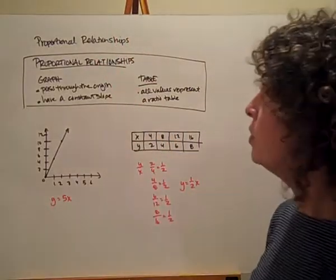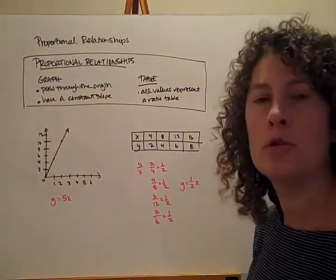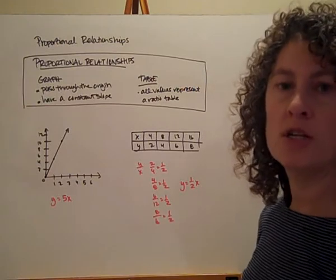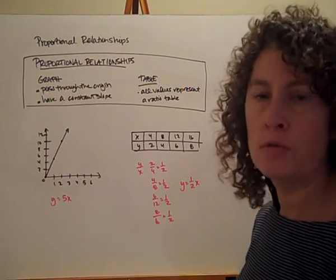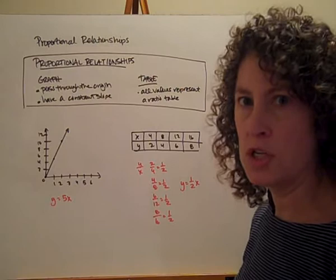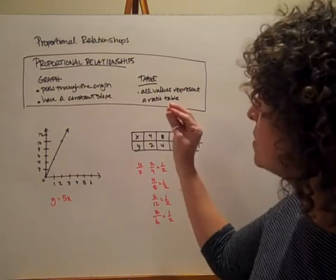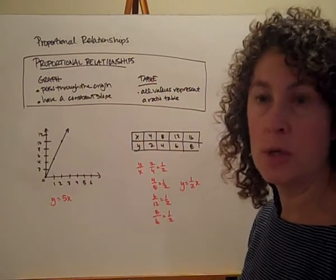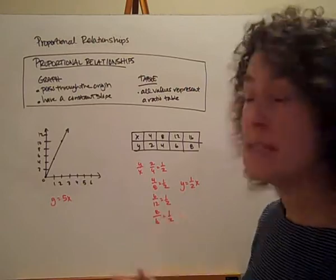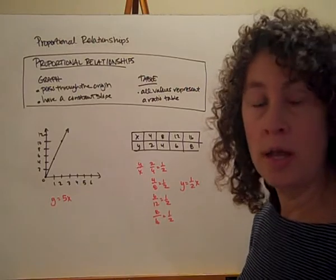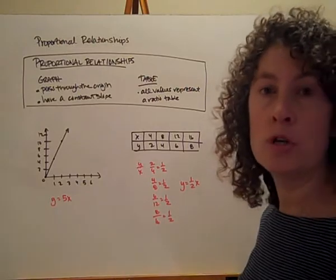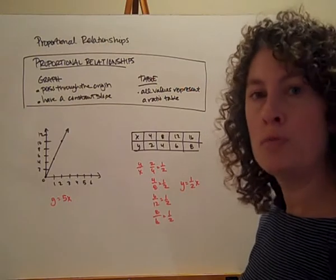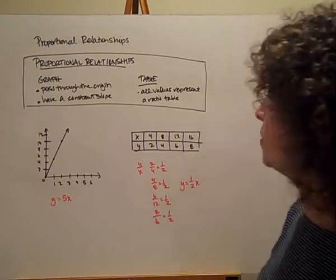Proportional relationships. We've been talking about direct variation equations, and direct variation equations are just a way to represent a proportional relationship. So now we'll take a look at some different representations of proportional relationships and decide if they are proportional or not. And then if we decide they are proportional, can we come up with a direct variation equation to represent that particular relationship?